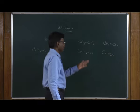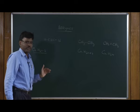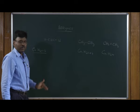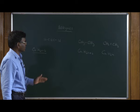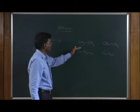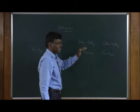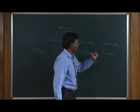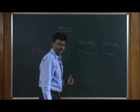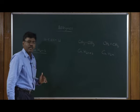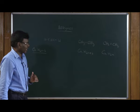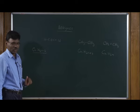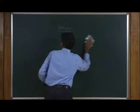If you compare these three hydrocarbons, alkynes have the least number of hydrogen atoms. For example, with two carbons: alkanes have six hydrogen atoms, alkenes have four hydrogen atoms, and alkynes have only two hydrogen atoms. So alkynes have the general formula CnH2n-2.